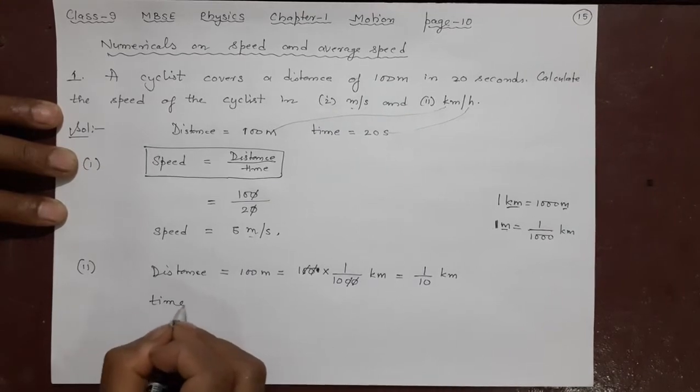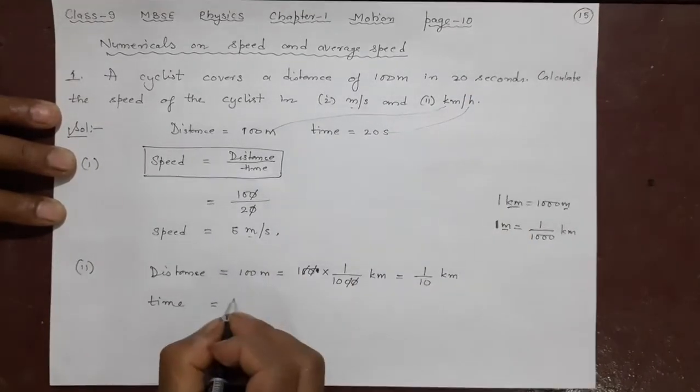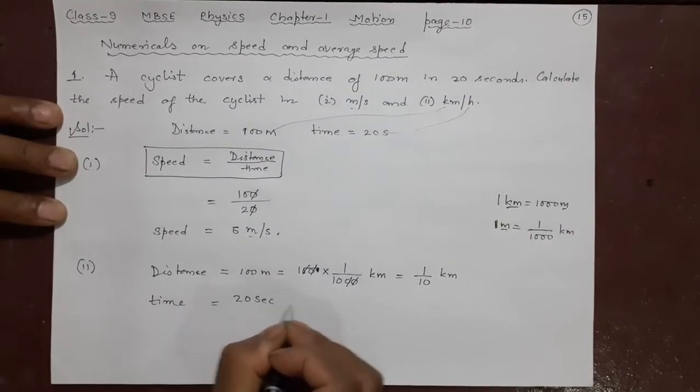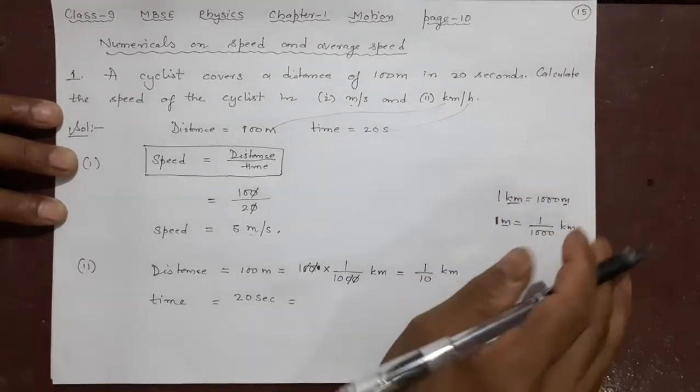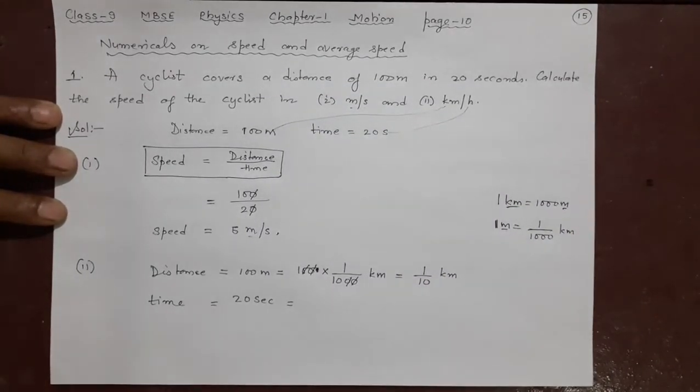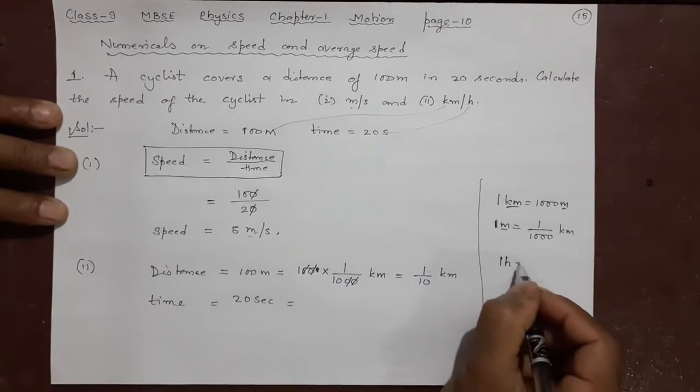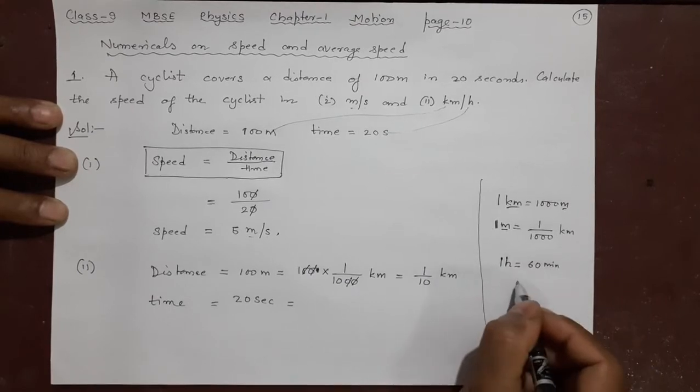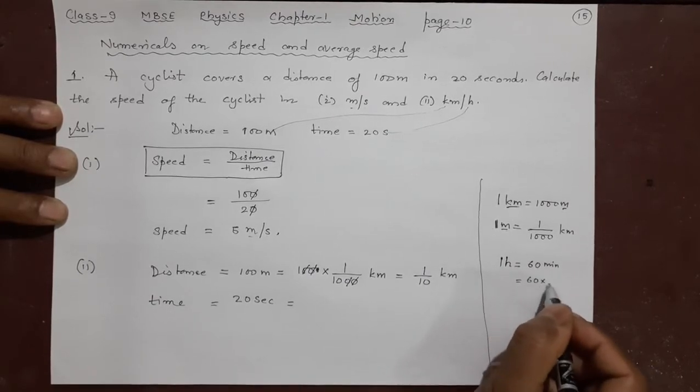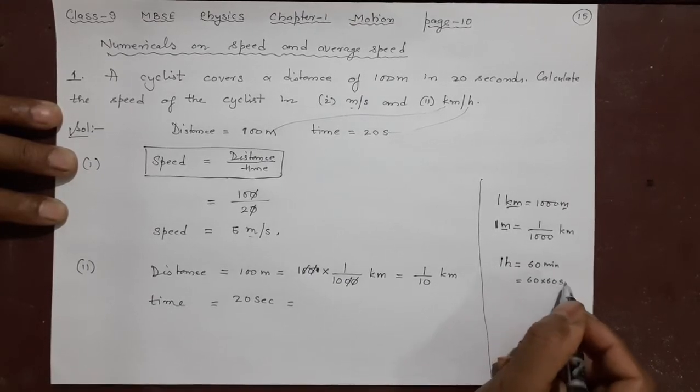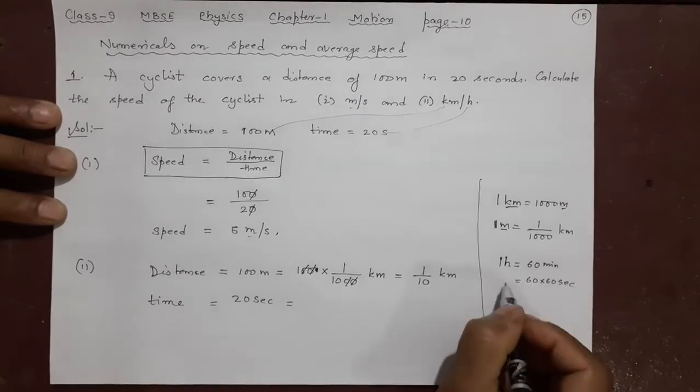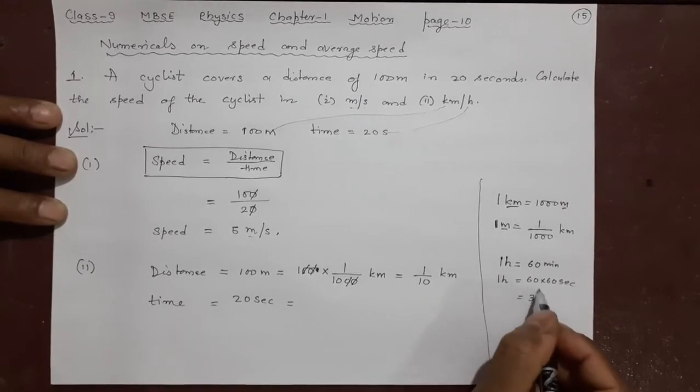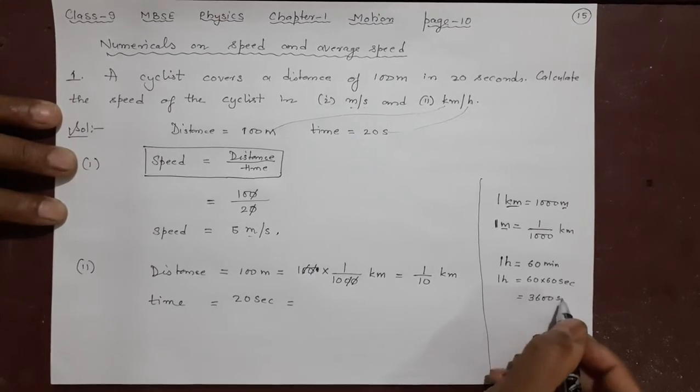What is the time? 20 seconds. Now I want this time in what? Hours. So 1 hour is how many seconds? You know this - this is the rough work here. 1 hour is 60 minutes, so 60 into 60 seconds. This is 1 hour, that much. So that means 3600 seconds.